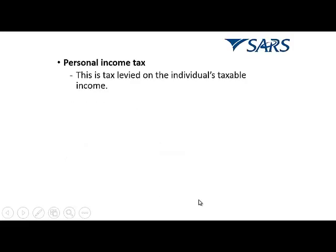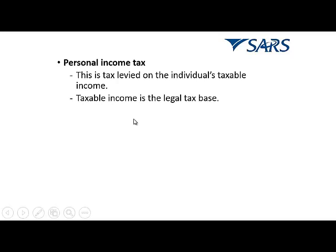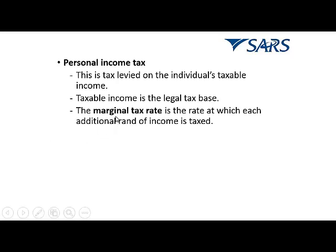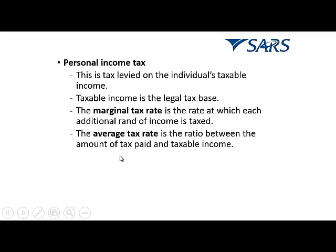Personal income tax is tax levied on a person's taxable income. The taxable income is the legal tax base. The marginal tax rate is the rate at which each additional rand of income will be taxed — if you earn more, what percentage tax will you pay on that additional income? The average tax rate is the ratio between the amount of tax paid and your total taxable income.